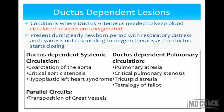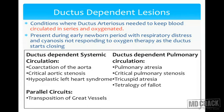Ductus-dependent lesions are conditions where the ductus arteriosus is needed to keep blood circulated in series and oxygenated. The circulation must be maintained in series: from the right atrium through the right ventricle, going through the lungs, back to the left side, and then applied to the body. If there is a problem in oxygenation — for example pulmonary atresia — we have ductus-dependent pulmonary circulation. Ductus-dependent systemic circulation includes coarctation of aorta, critical aortic stenosis, and hypoplastic left heart syndrome. Ductus-dependent pulmonary circulation includes pulmonary atresia, critical pulmonary stenosis, and tricuspid atresia.